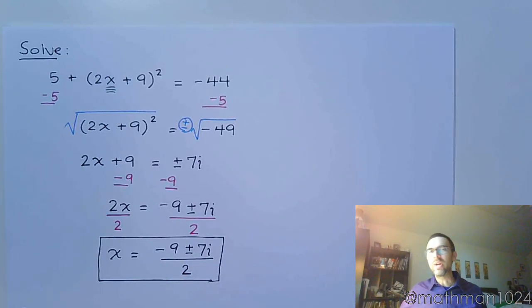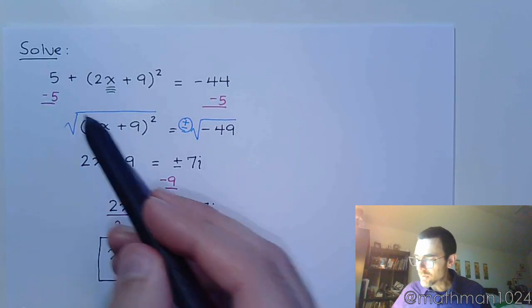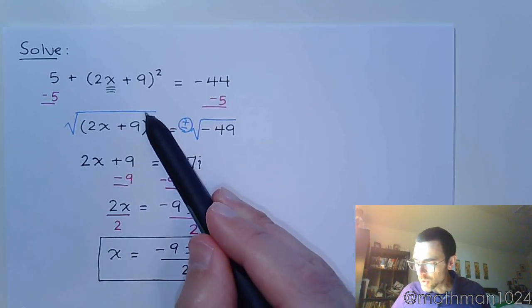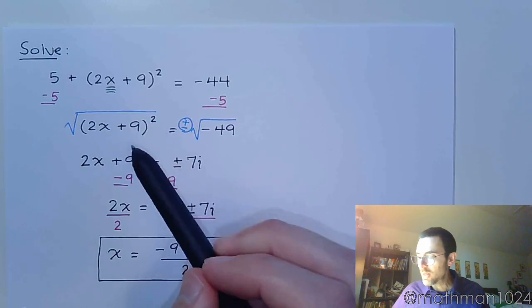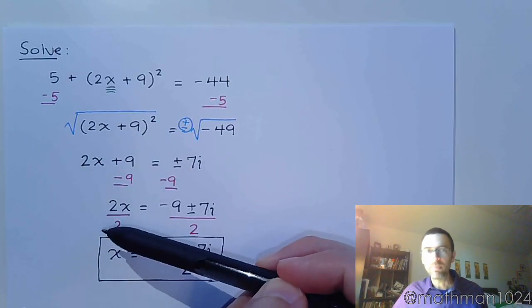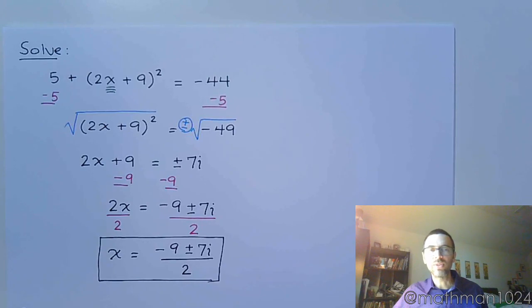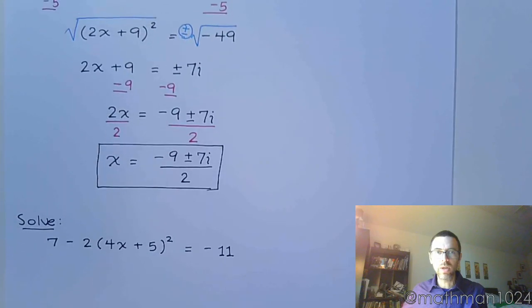Please notice that I didn't do anything crazy in the process of solving for x. You know, I moved the 5 to the other side, I had to use the square root property to undo the square, subtract the 9, divide by 2. It's all about those inverse operations and getting x completely by itself.